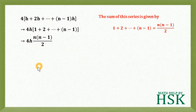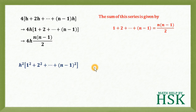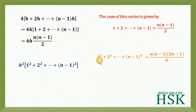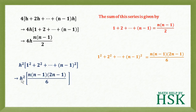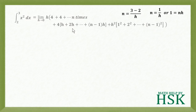Similarly, h squared times 1 squared plus 2 squared up to n minus 1 squared equals h squared times n into n minus 1 into 2n minus 1 upon 6, applying the standard sum of squares formula sigma of n minus 1 squared. Substituting these values into the summation, we have 4n plus 4h times n into n minus 1 upon 2 plus h squared times n into n minus 1 into 2n minus 1 upon 6.